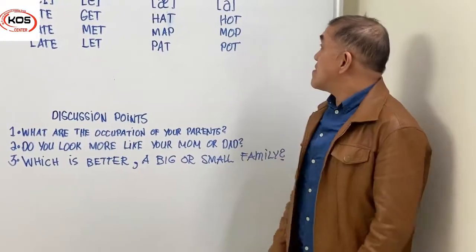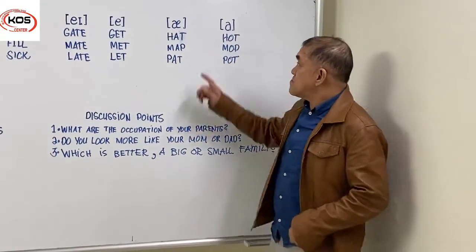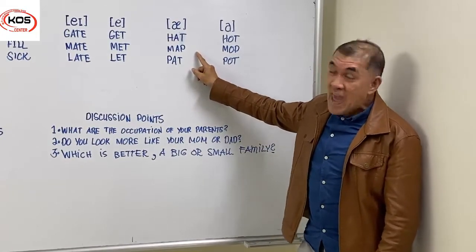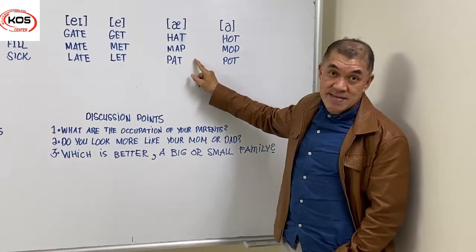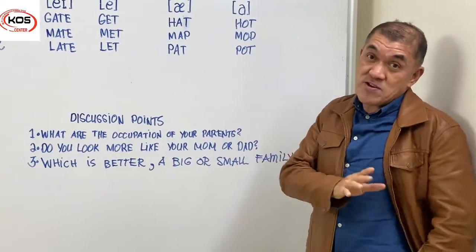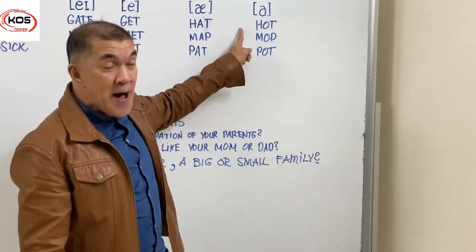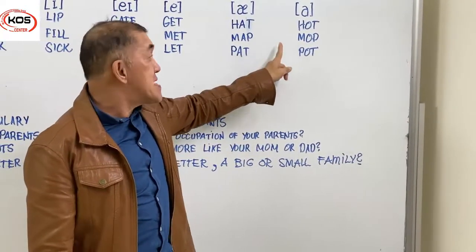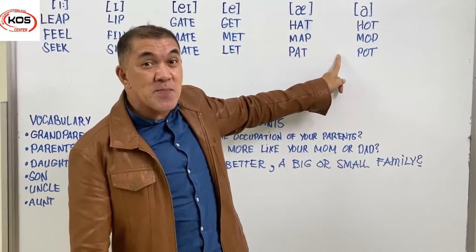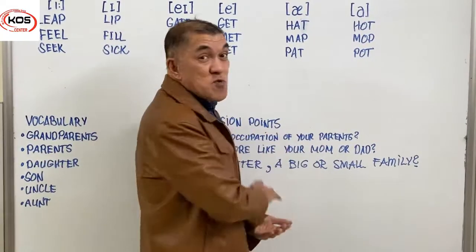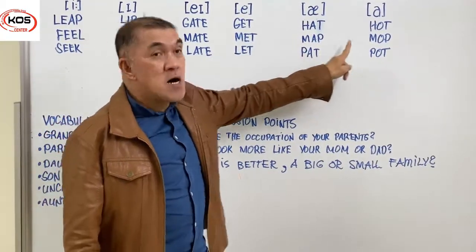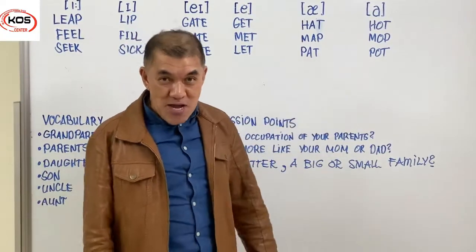We have the A sound and the AW sound. A words: hat, hat, hat. Map, map, map. Pat, pat, pat. Now the AW words: hot, hot, hot. Mop, mop, mop. Pot, pot, pot. Now I'm going to read both groups of words together to compare: hat, hot. Map, mop. Pat, pot.